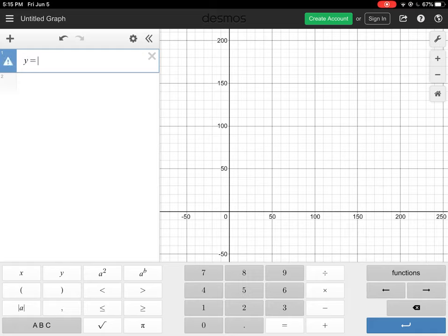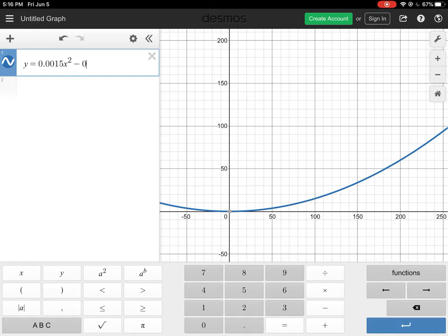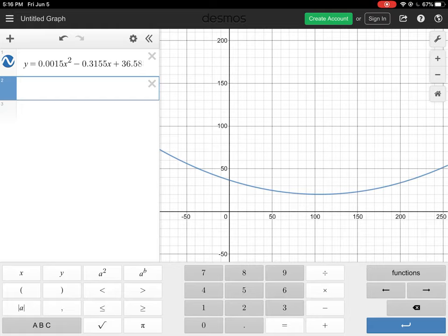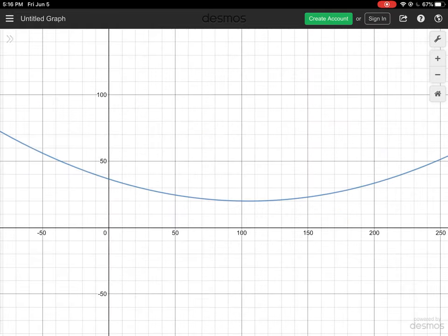So in this case, our equation is y equals 0.0015x². So we have an x and then we have a squared function. Then we're going to go minus 0.3155x plus 36.588. Okay, and then you can just hit the return key here. And then I can hide what this equation is.